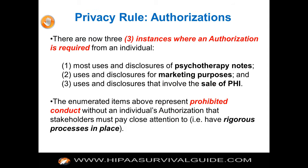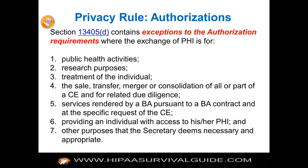The three main uses and disclosures requiring authorization are: psychotherapy notes, for marketing purposes, and uses and disclosures that would involve the sale of PHI. However, the omnibus rule actually made the sale of PHI illegal, so there is no authorization that will get you around that.